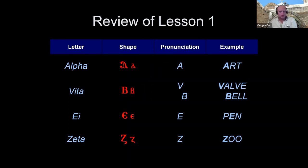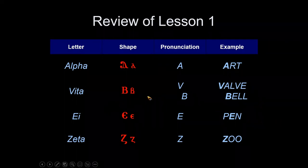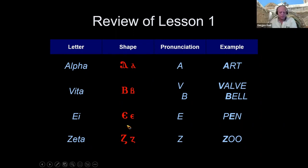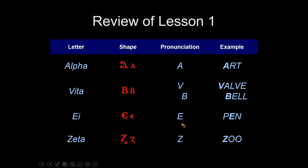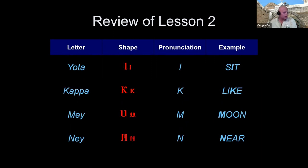Let us first review the letters that we learned so far. I'd like to get some volunteers to help us review. Jamie, please do the first slide. Alpha is A, Vita is V or B, Ei is E like pen, Zeta is Z like zoo or zipper.